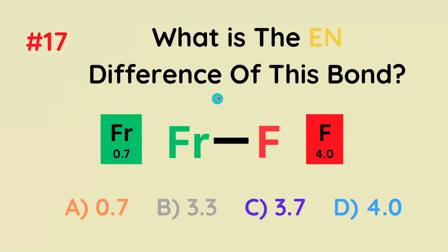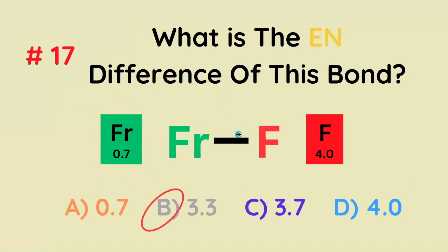What's the difference in electronegativity of this bond? Francium and fluorine. It's just going to be 4.0 minus 0.7, which would be 3.3.